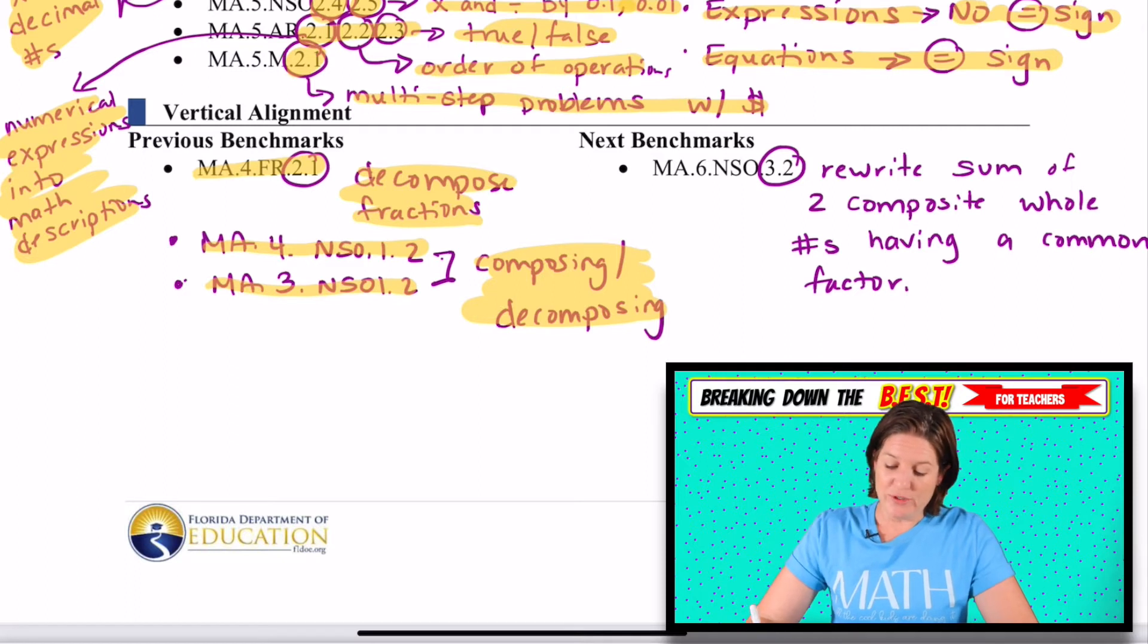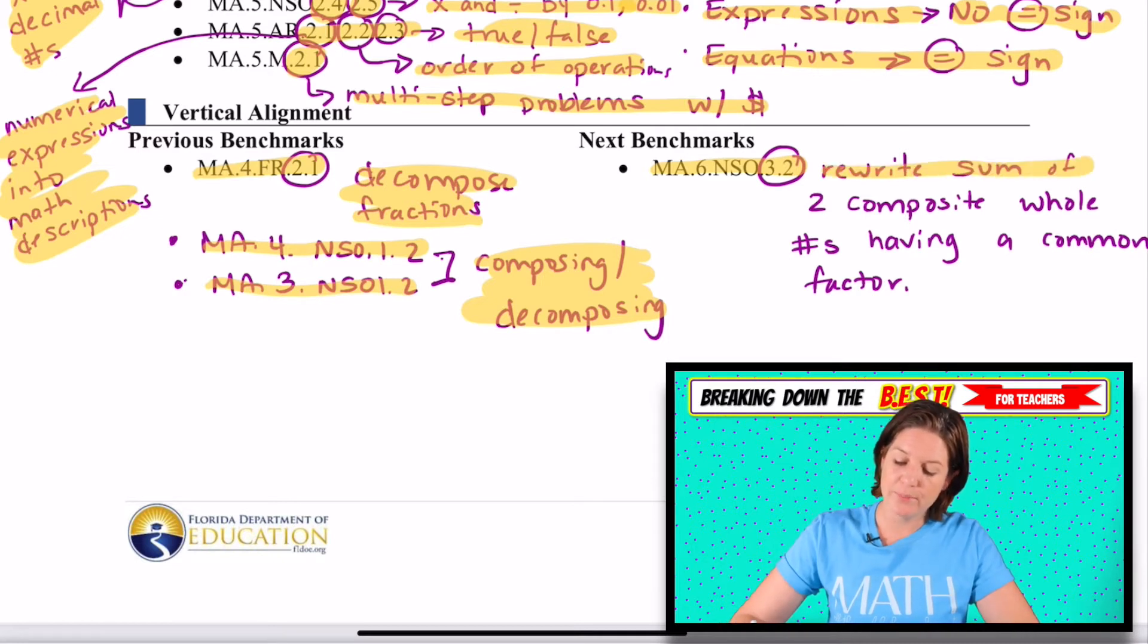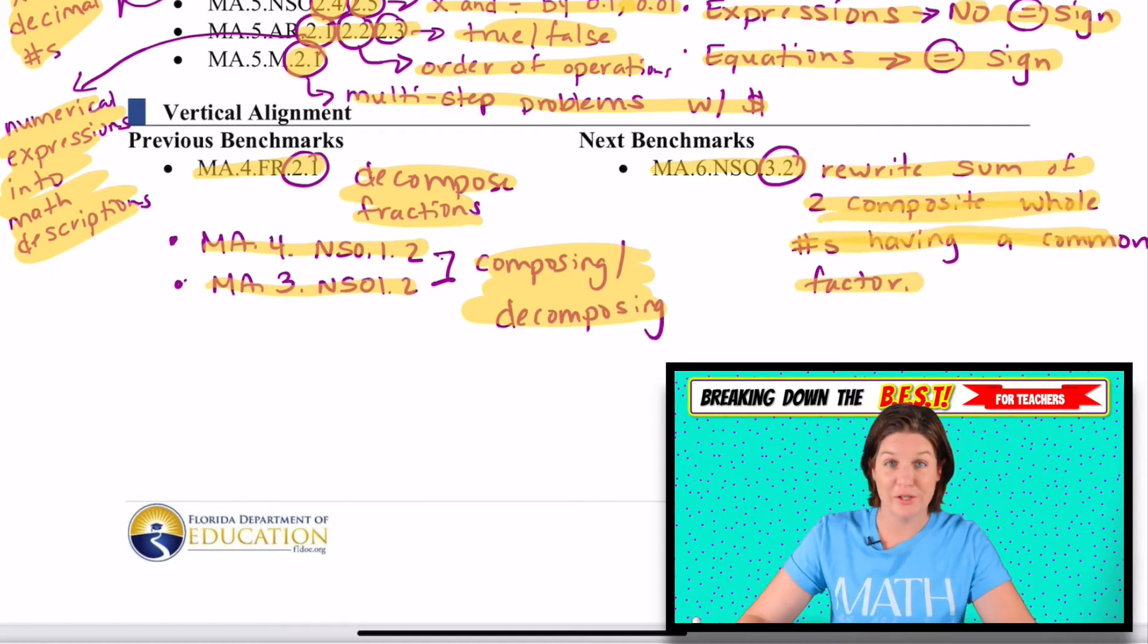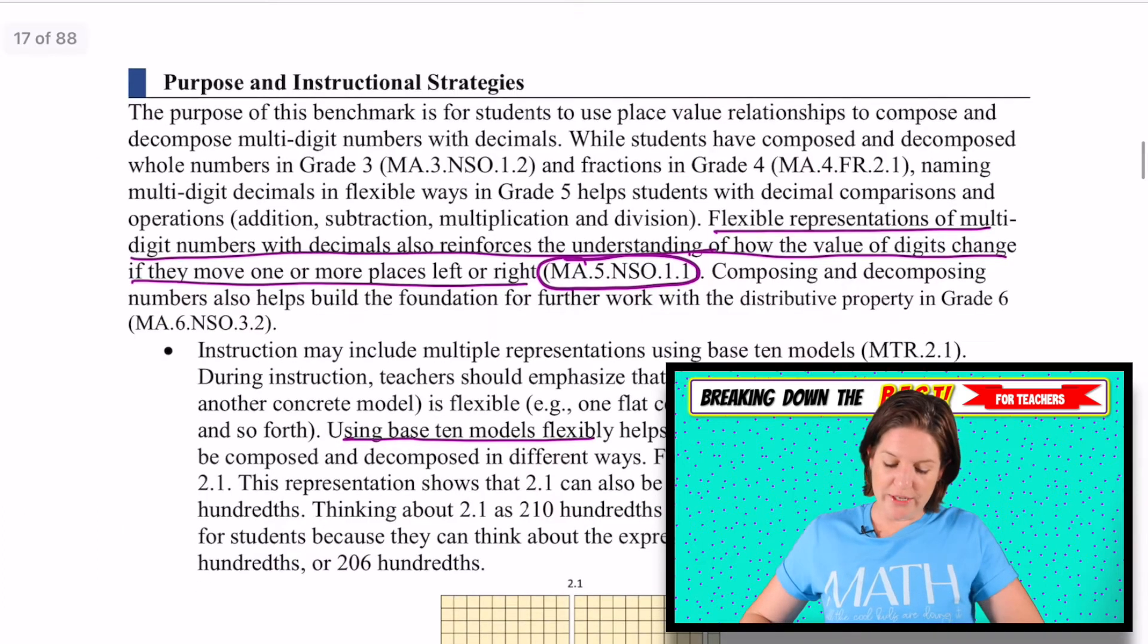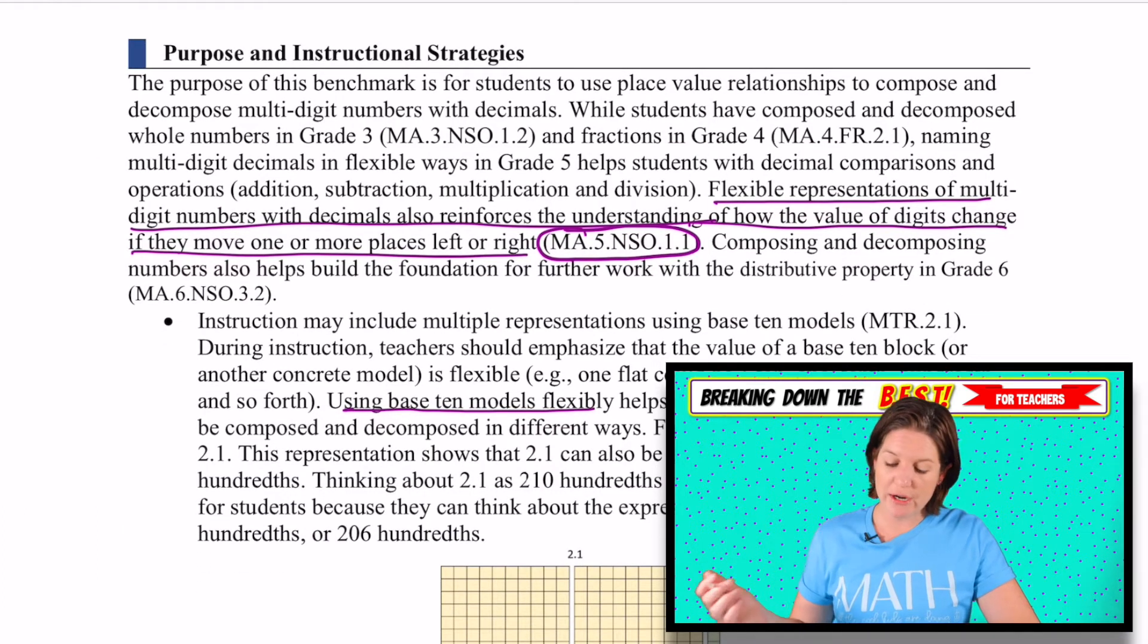You can even go down to the third grade level if you want. I think third grade is a little bit more complex because they have explicitly said to regroup in that standard. So, all right, anyway, so where are they going in sixth grade? They're going to 6.NSO.3.2, which is where they will rewrite the sum of two composite whole numbers having a common factor. That sounds really fancy, doesn't it?